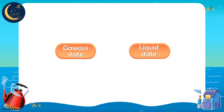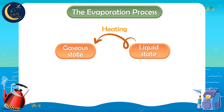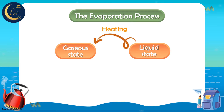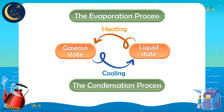So, my friends, there are two processes: the change of matter from the liquid state to the gaseous state when heated — this is the evaporation process — and the change of matter from the gaseous state to the liquid state when cooled — this is the condensation process. So, evaporation and condensation are opposite processes.